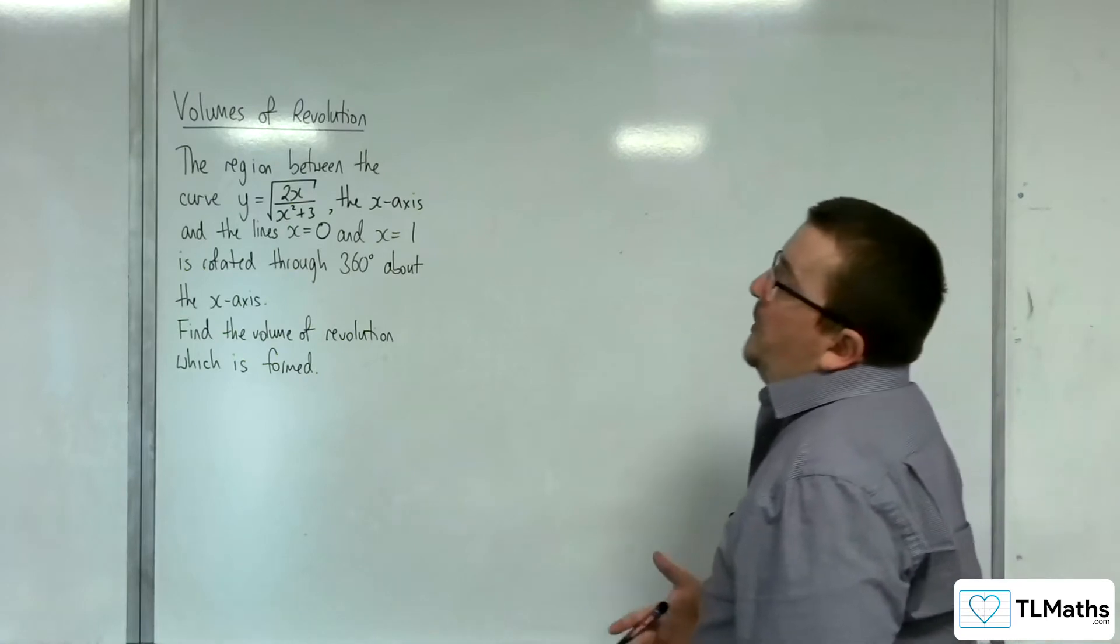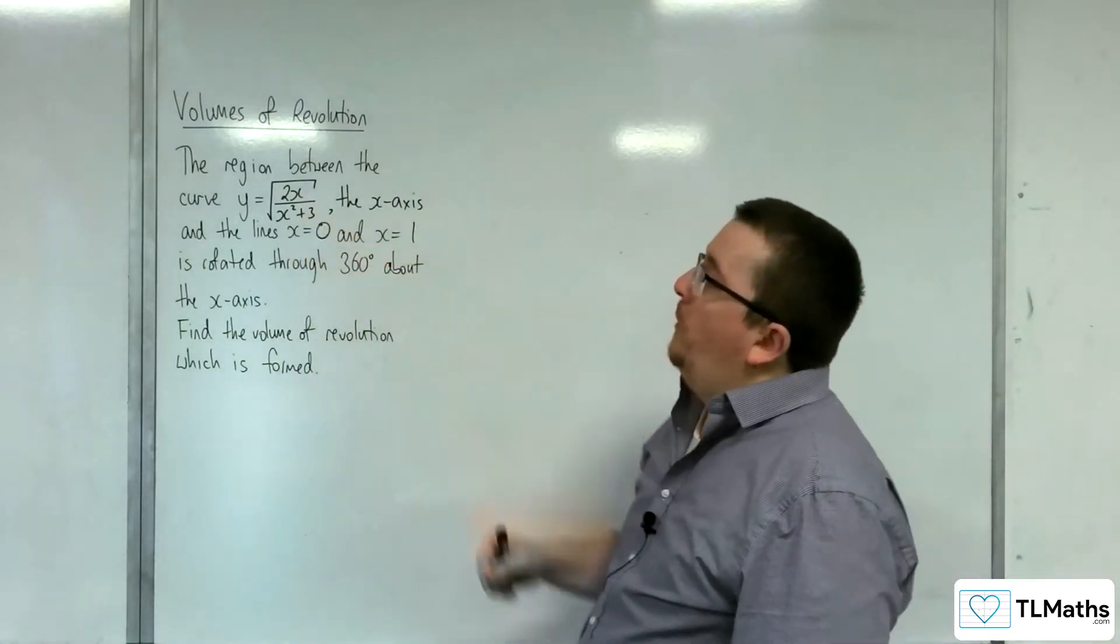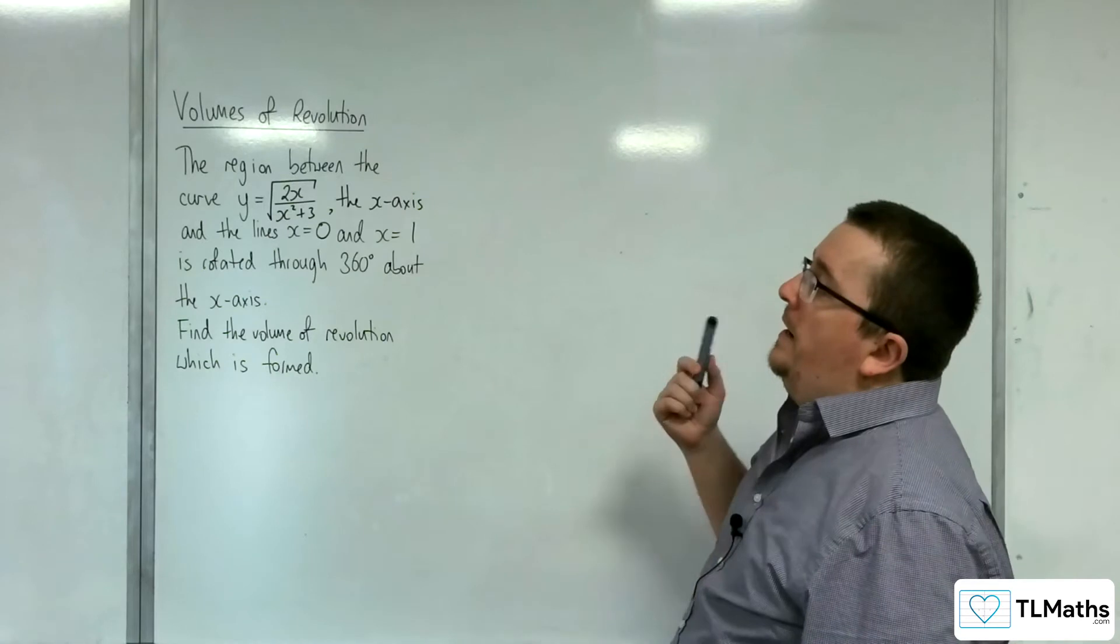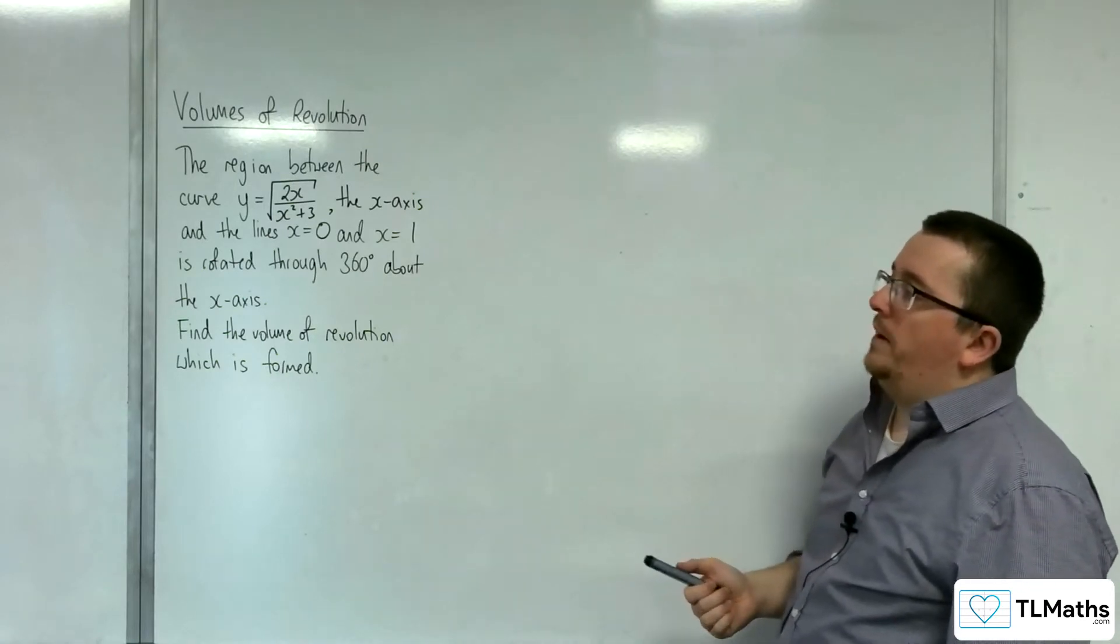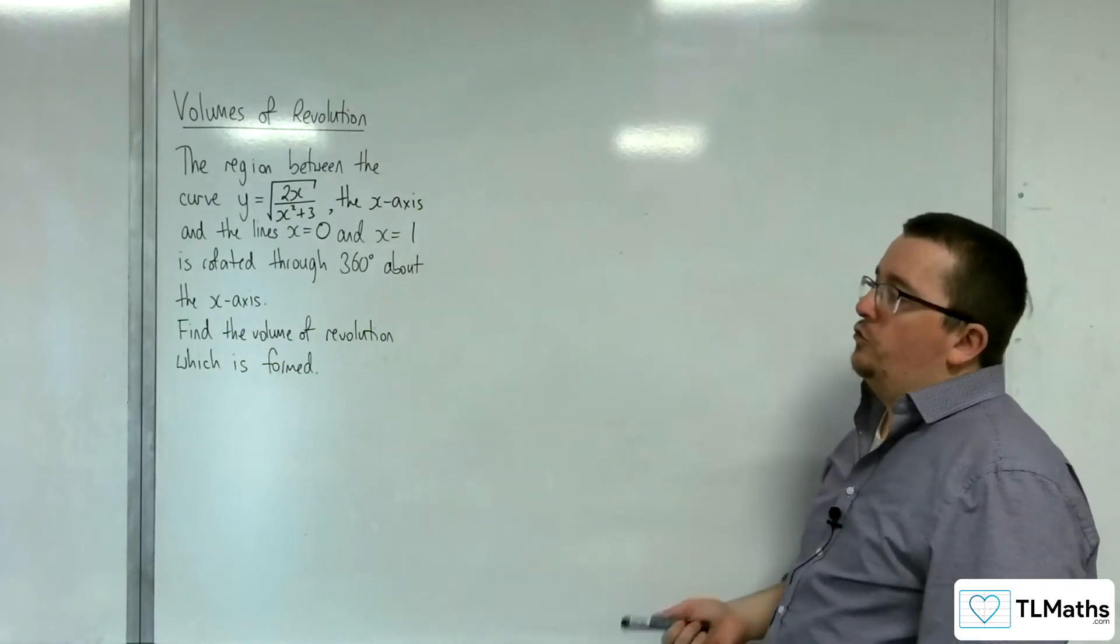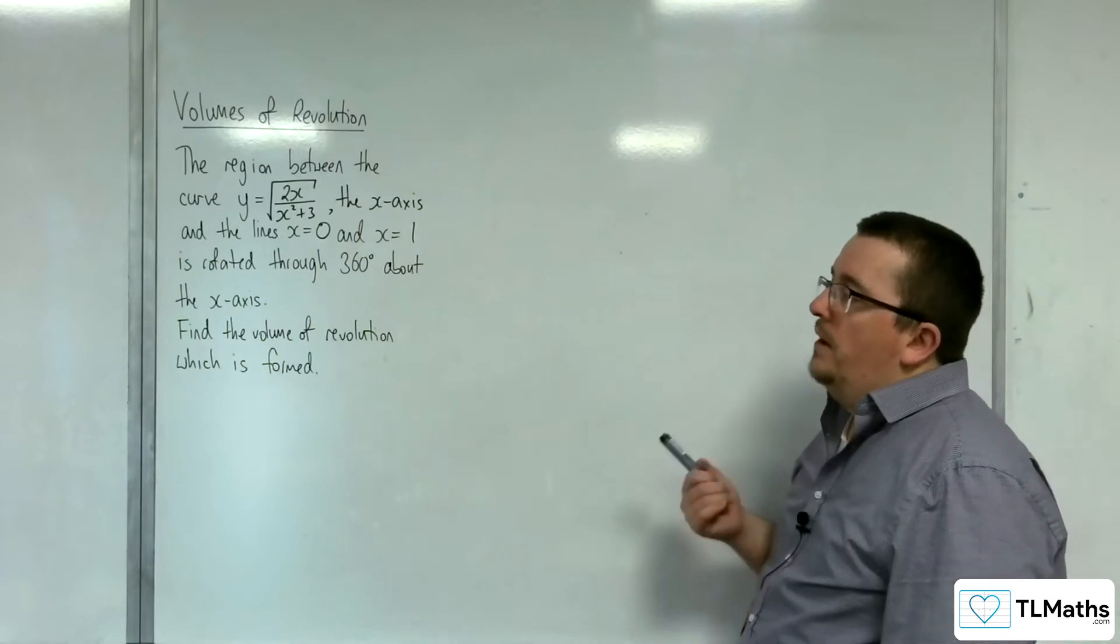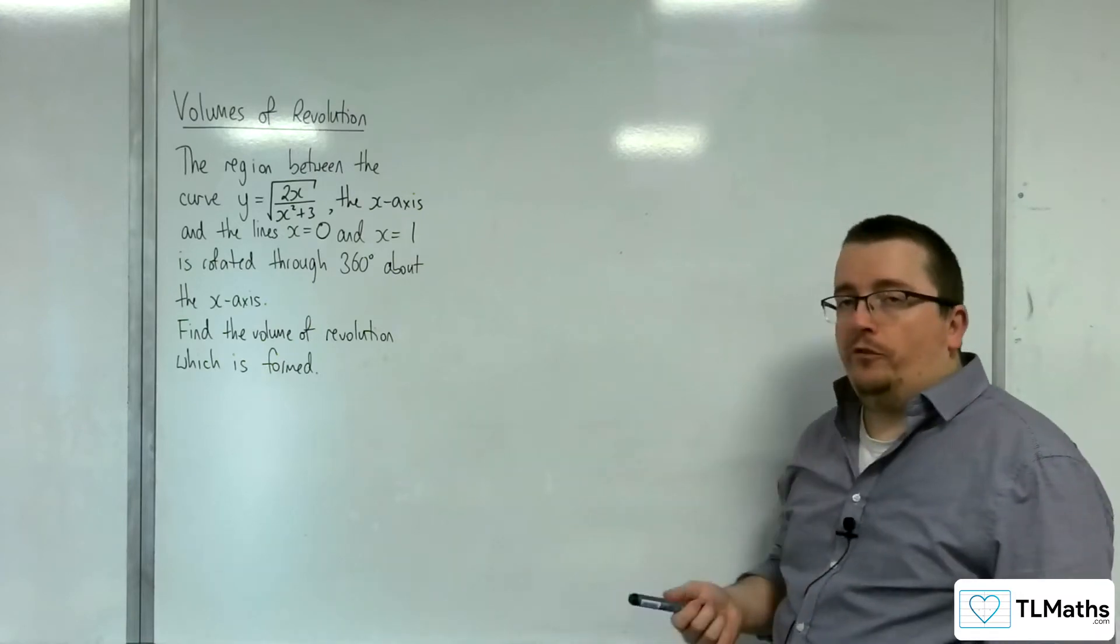The region between the curve y equals the square root of 2x over x squared plus 3, the x-axis, and the lines x equals 0 and x equals 1 is rotated through 360 degrees about the x-axis. Find the volume of revolution which is formed.